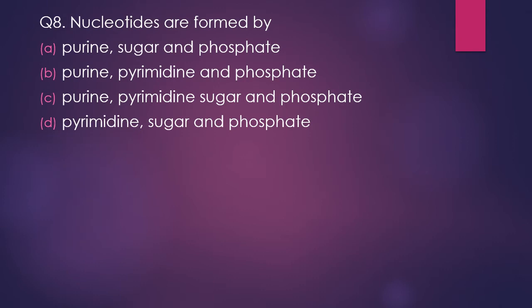Question 8. Nucleotides are formed of — remember, when reading such questions, note whether they ask about nucleotide or nucleoside; that single difference in wording matters greatly. Options: purine, sugar and phosphate; purine, pyrimidine and phosphate; purine, pyrimidine, sugar and phosphate; or pyrimidine, sugar and phosphate. The correct answer is option C: purine, pyrimidine, sugar and phosphate.